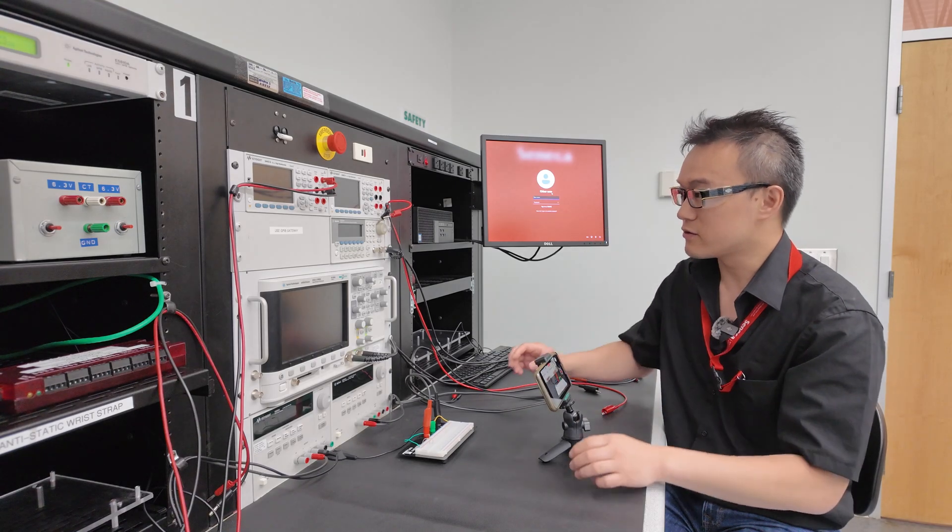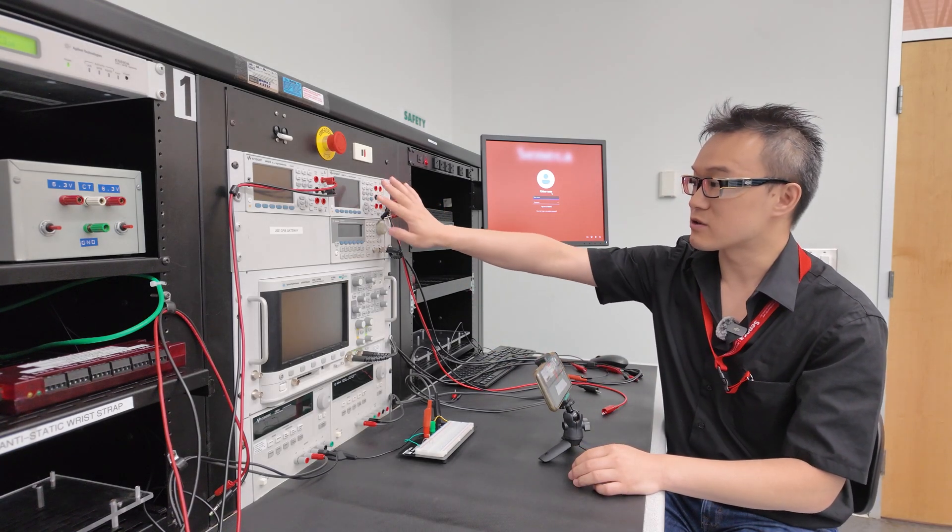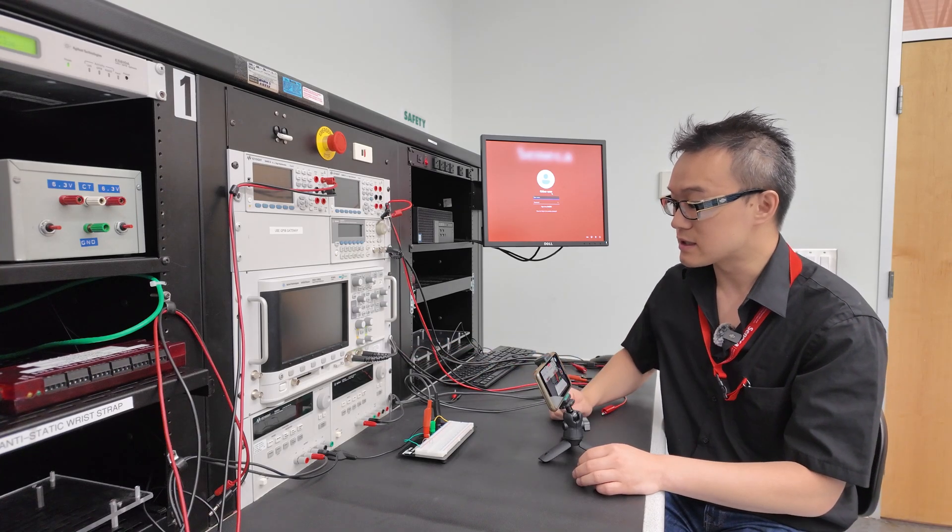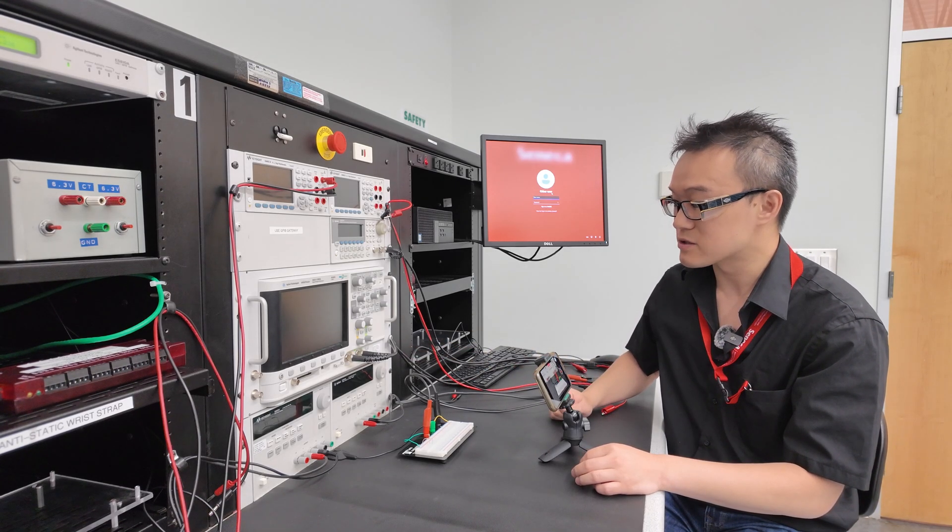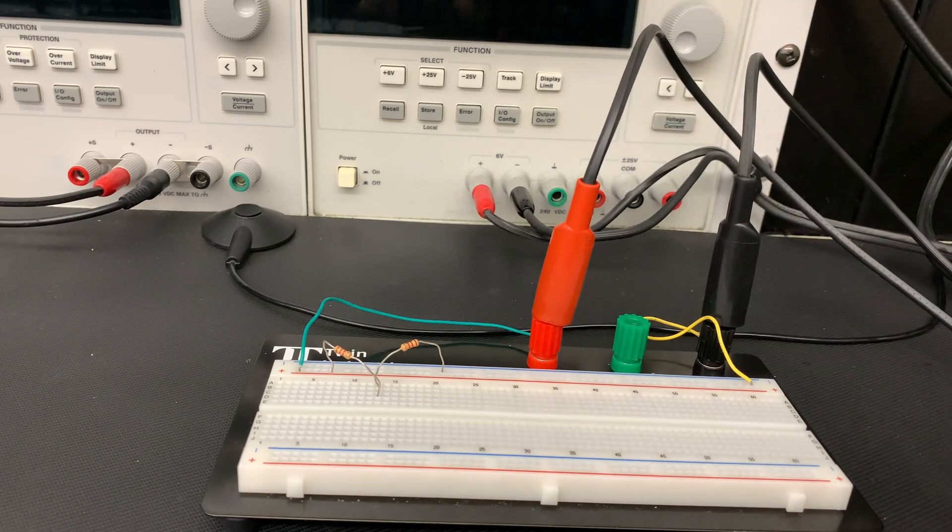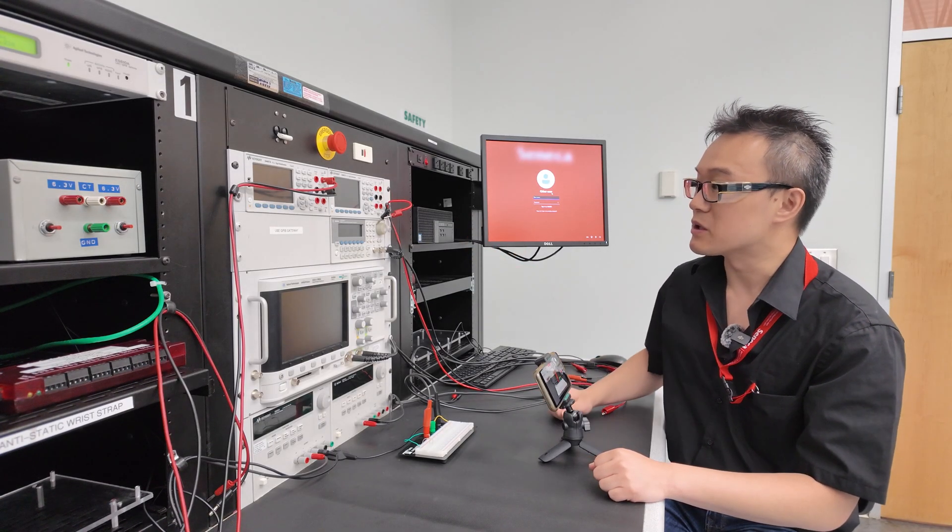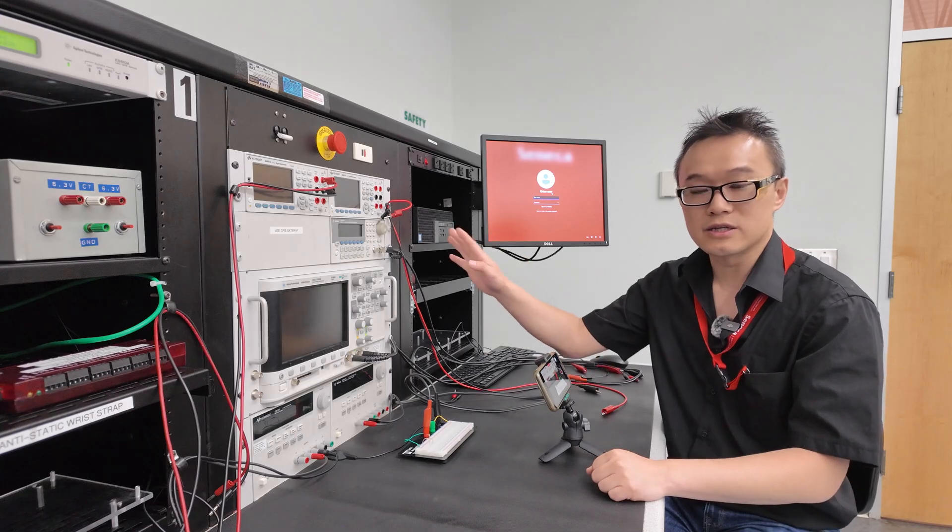The first thing I want to do when we arrive at the lab is make sure that our multimeter is turned off as well as the power supply. We won't go through the power supply because it was covered in another video, so we'll go in more detail on how to use the digital multimeter.